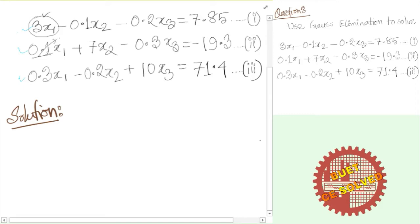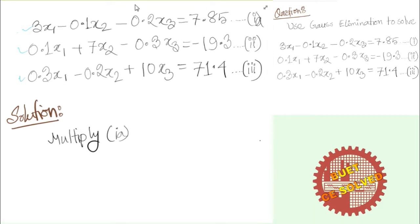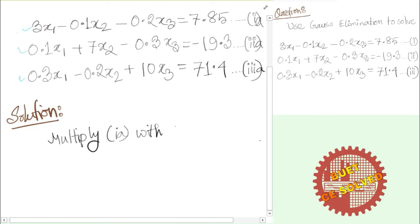We write out the matrix coefficients: 1, 1, 3, 1, and 3. We set up the augmented matrix. So 1a2a3 is equal to 1a3, and 1a3 is equal to 0.1 by 3. The first equation coefficient is 0.1.